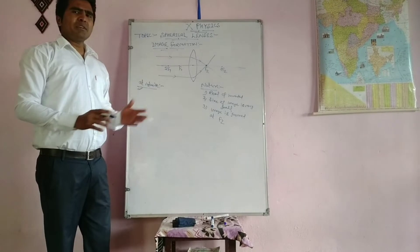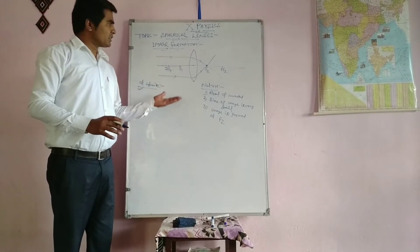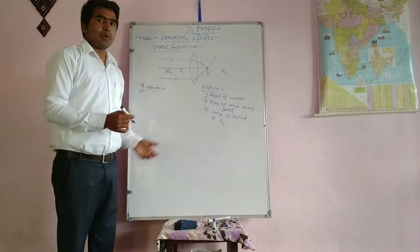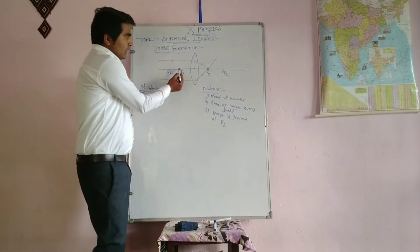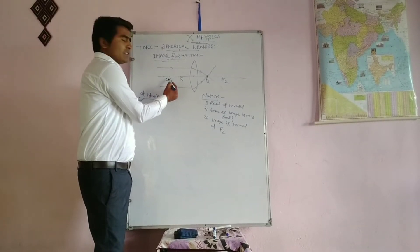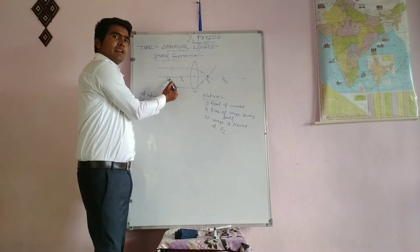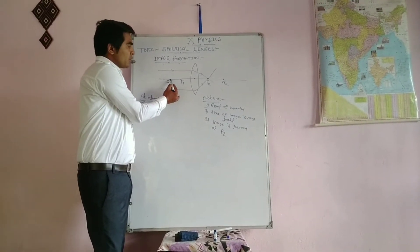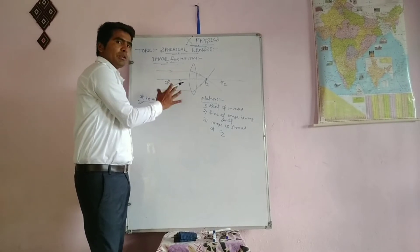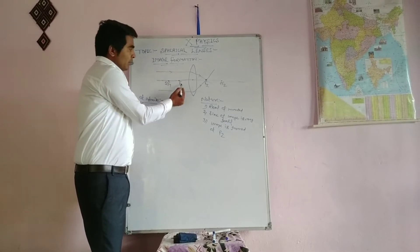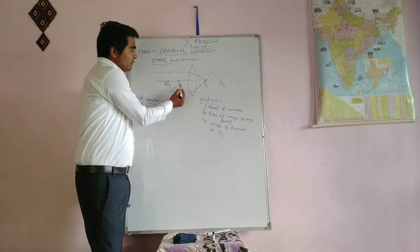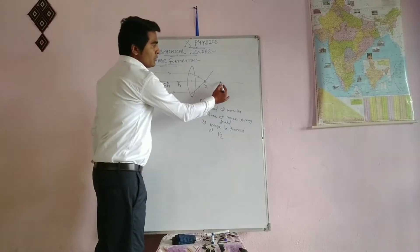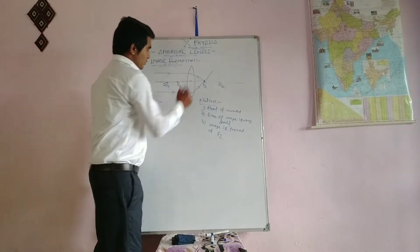We have already discussed F1, F2, and center positions in previous videos. The double of F1 is C1, and we can write C1 as 2F1, and C2 as 2F2.